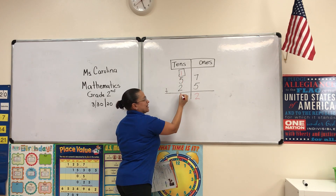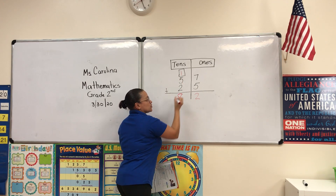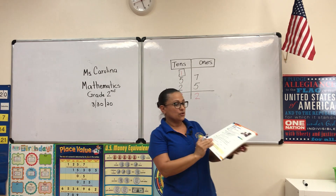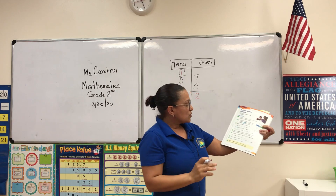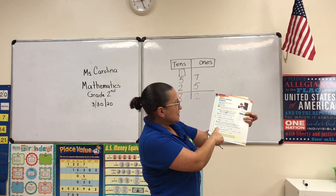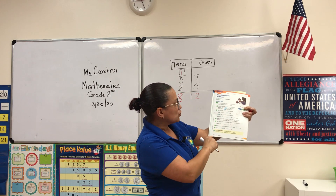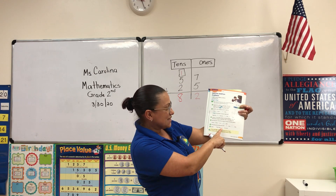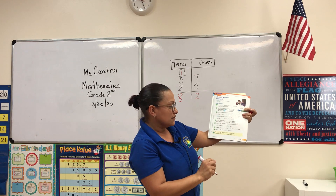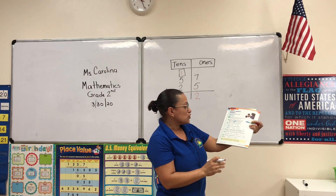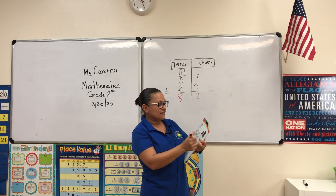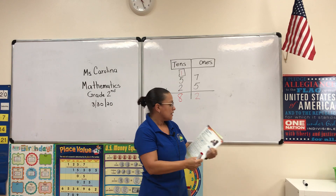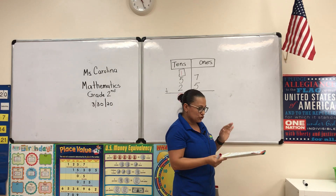We have 1 plus 5 plus 2 in the tens, which equals 8 tens. So the answer is 82. They have 82 toy cars altogether.